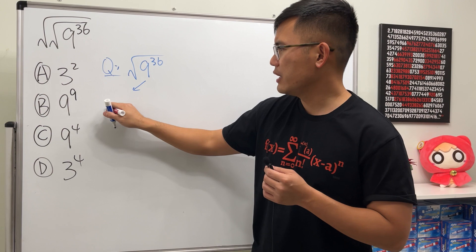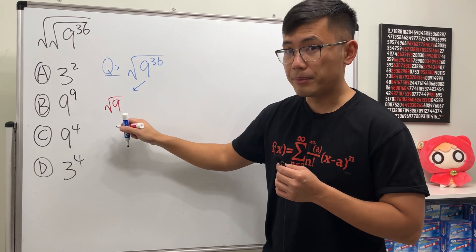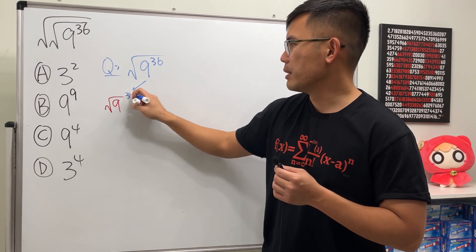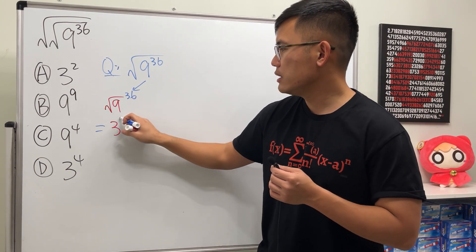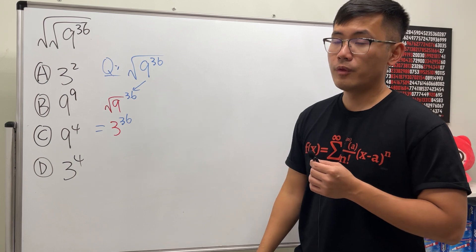So can we just go ahead and do the square root of 9 first? In that case, we are looking at square root of 9 for the base and then just keep the power to be the same. In this case we will end up with 3 raised to the 36th power.